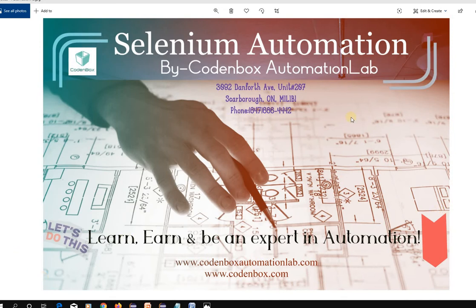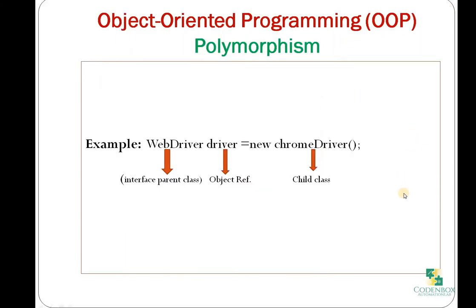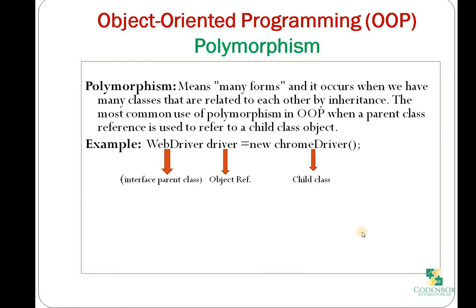Let's see what polymorphism is first — a definition. What is polymorphism? 'Poly' means many, and 'morphism' means form. So polymorphism means many forms. It occurs when we have multiple classes that are related to each other by inheritance. The most common use of polymorphism in OOP is when a parent class reference is used to refer to a child class object.